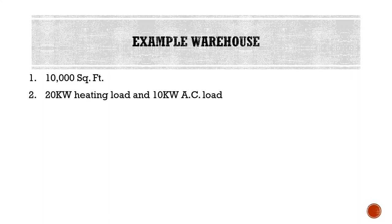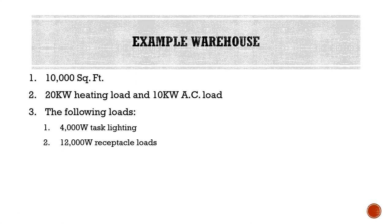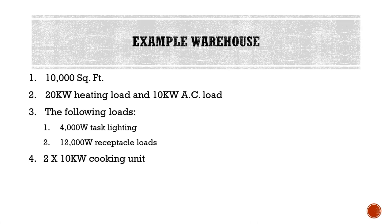We have an example warehouse that we're going to use, in the same format as we did for the dwelling. We have a 10,000 square foot warehouse. In this warehouse, there's going to be a total of 20 kW of heating load and 10 kW of AC load — I've given you the load amounts in kW to simplify things. We have the following miscellaneous loads: 4,000 watts of task lighting, 12,000 watts of receptacle loads, and two 10 kW cooking units.